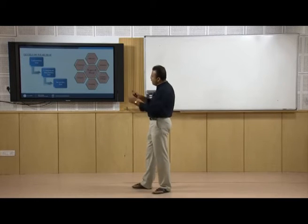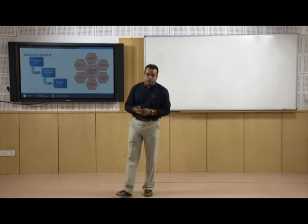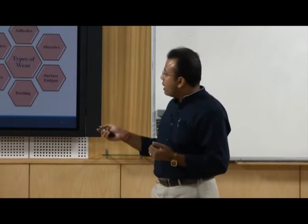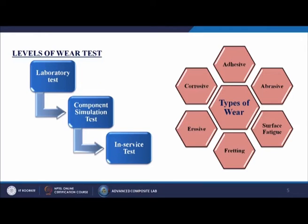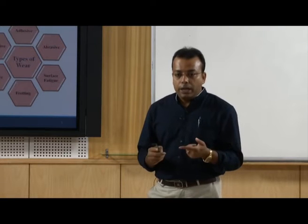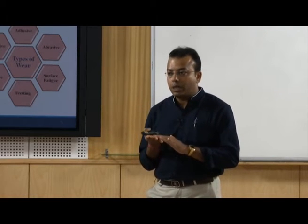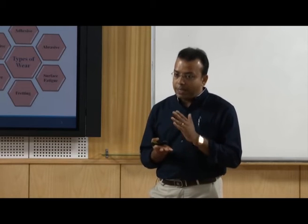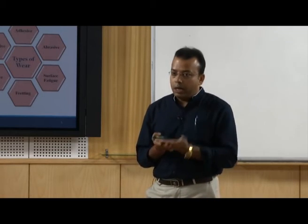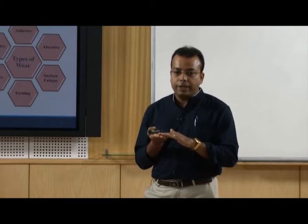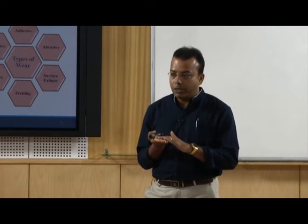The next slide is divided into two parts. The left-hand side depends on the level of wear testing — how we can measure wear. First is called the laboratory test, where there are several types of laboratory equipment: a profilometer to see friction and surface roughness of that particular material, scanning electron microscopy, and AFM methods, by which we can measure whether any wear has occurred to that material or not.